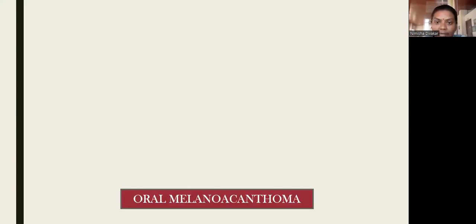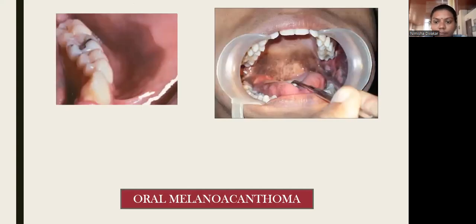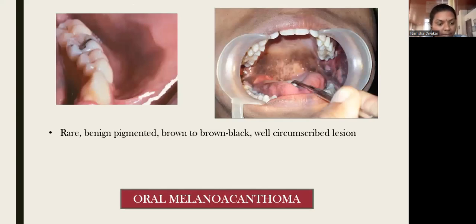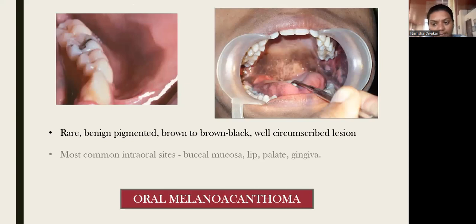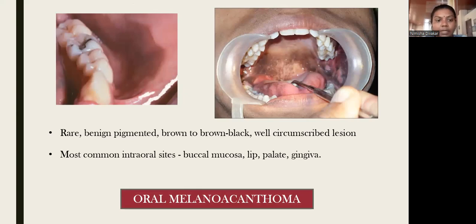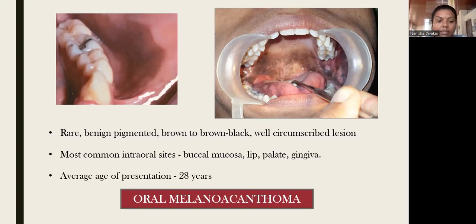Next is oral melanocytosis. It is a common pigmentation seen in the oral cavity. They are benign, pigmented, brown to brownish-black in color, and well-circumscribed. In dark-skinned people it is a common finding. The most common oral sites are buccal mucosa, lip, palate, and gingiva. The average age of presentation is 28 years.